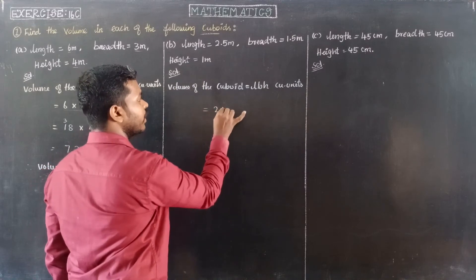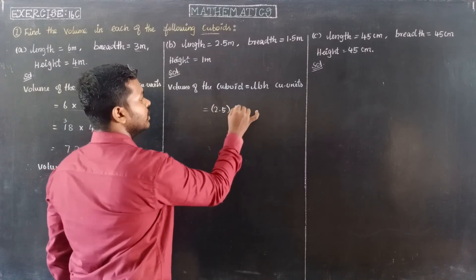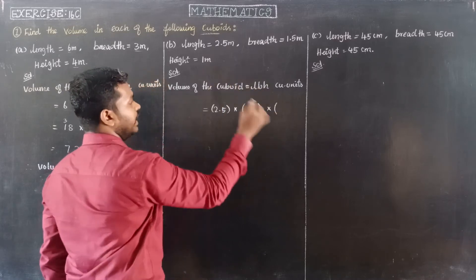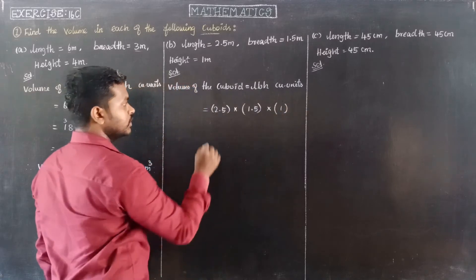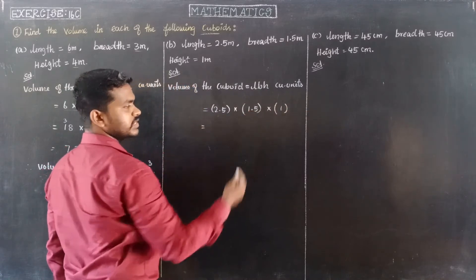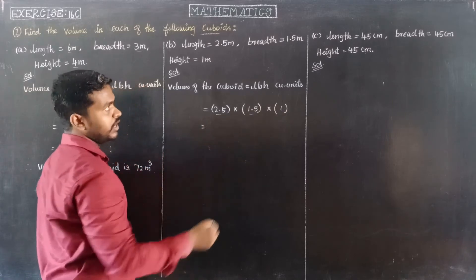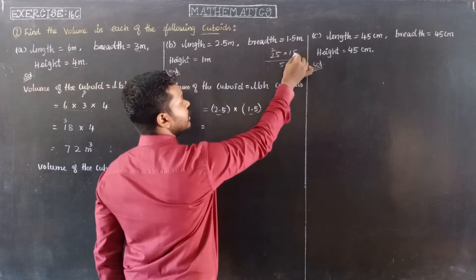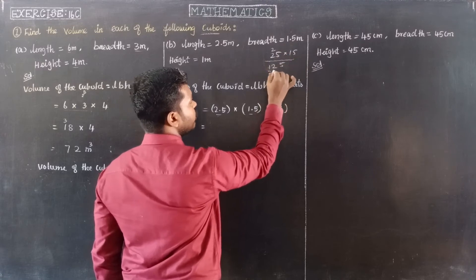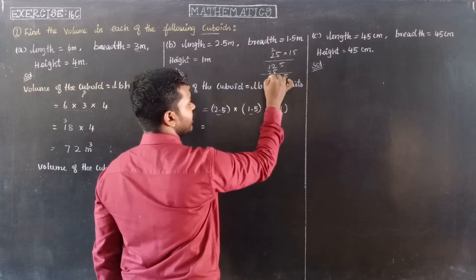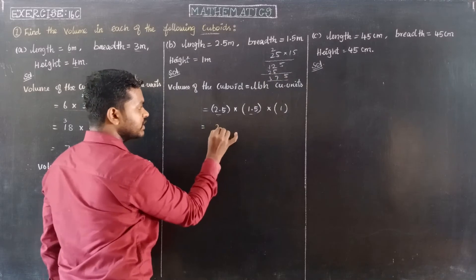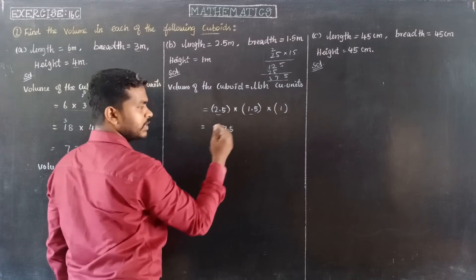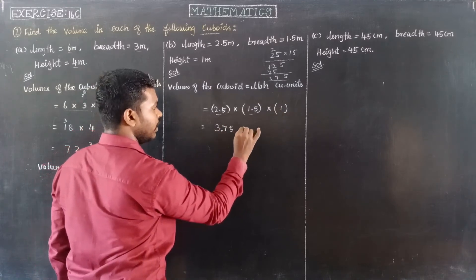So, length 2.5 meter into breadth 1.5 meter into height 1 meter. So, 2.5 into 1.5. 5 times 5 is 25, remaining 2. 5 times 1 is 5, plus 2 is 7. Remaining, 5 times 2 is 10, plus 5 is 15, giving 375. Two decimal places, so 3.75 meter cube. Into 1, same value — therefore, volume of the cuboid is 3.75 meter cubed.